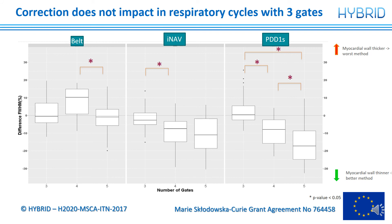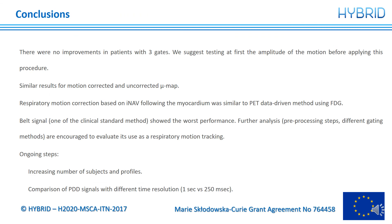We found that the improvement is greater with longer respiratory cycles, up to 15% with 5 gates, but almost negligible with 3 gates for all of the methods. As a conclusion, respiratory motion correction did not show improvement in subjects with 3 gates — is motion correction needed in this case? Similar results for motion-corrected and uncorrected mu maps were found. Respiratory motion correction based on MR was similar to the FDG PET data-driven method. The belt signal, the current clinical standard method, showed the worst performance. Further analyses are encouraged to evaluate its use as a respiratory motion tracking method. We would also like to increase the number of subjects and profiles and make a comparison of PET signals with different time resolution: 1 second versus 250 milliseconds.